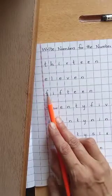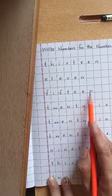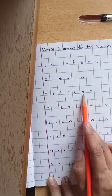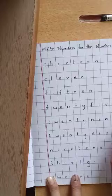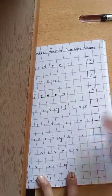Next one is 15. F-I-F-T-E-E-N. This is the spelling of number 15. Which number do you have to write, children? We have to write here number 15.